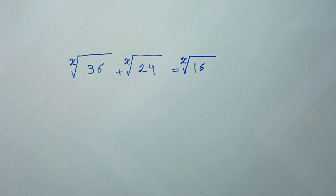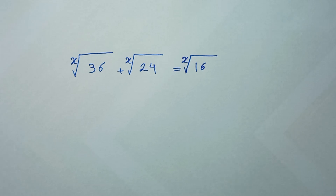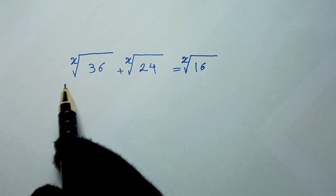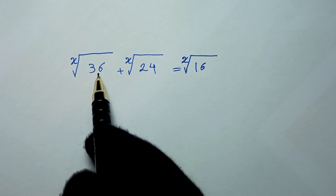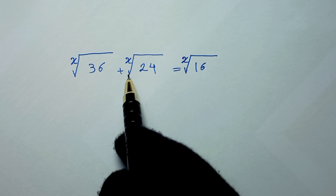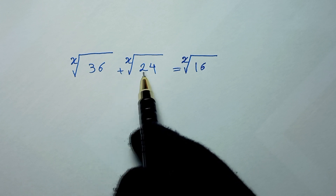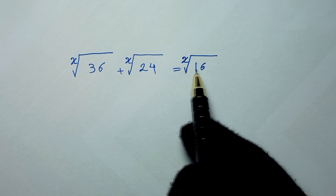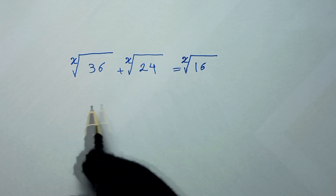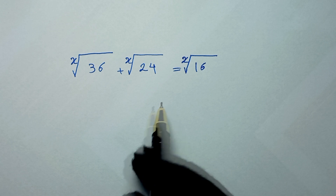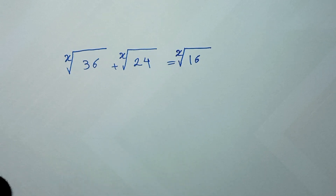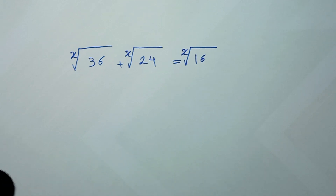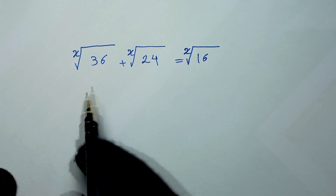Hello my friends, you're welcome to solve this math problem, which is x-root of 36 plus x-root of 24 is equal to x-root of 16. We need to find the values of x. In the first step, we divide both sides of this equation by x-root of 16.